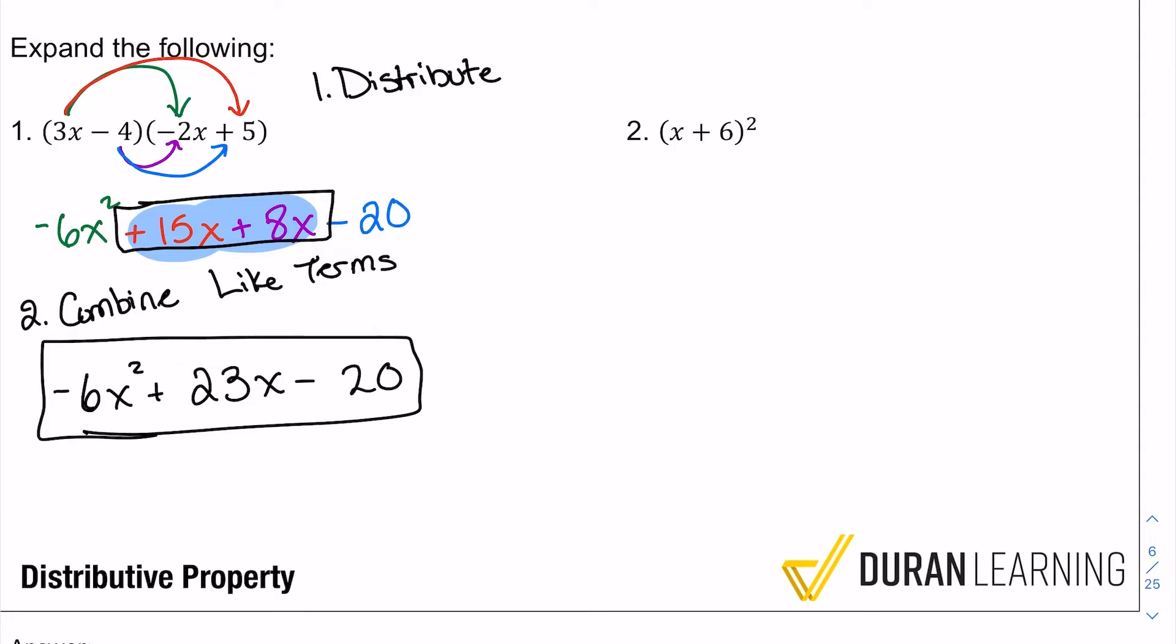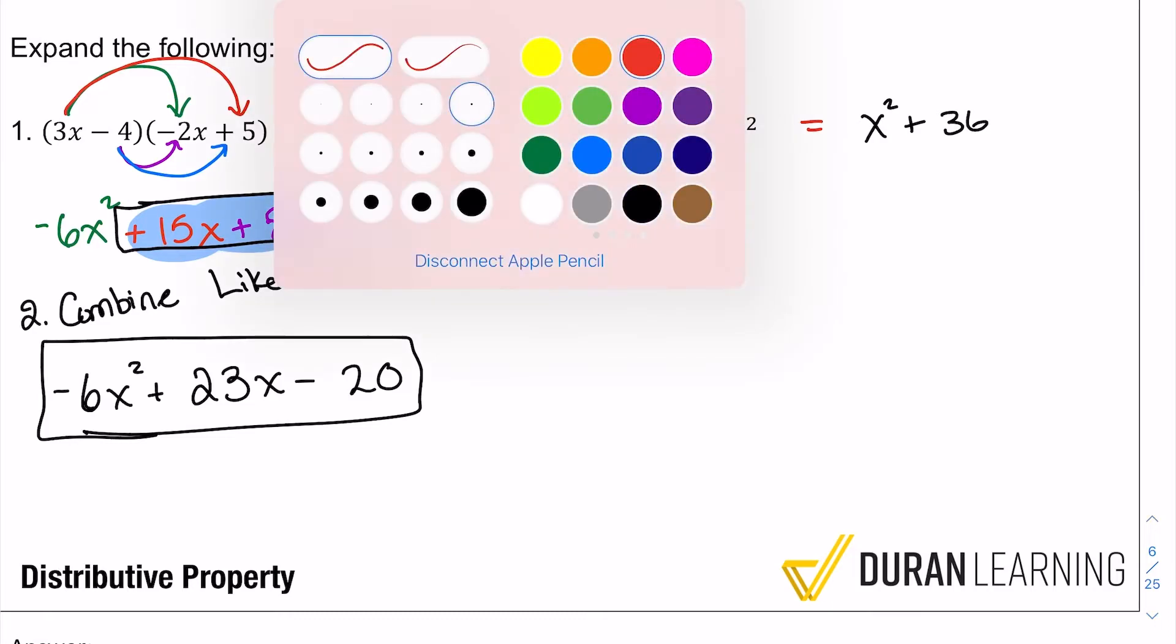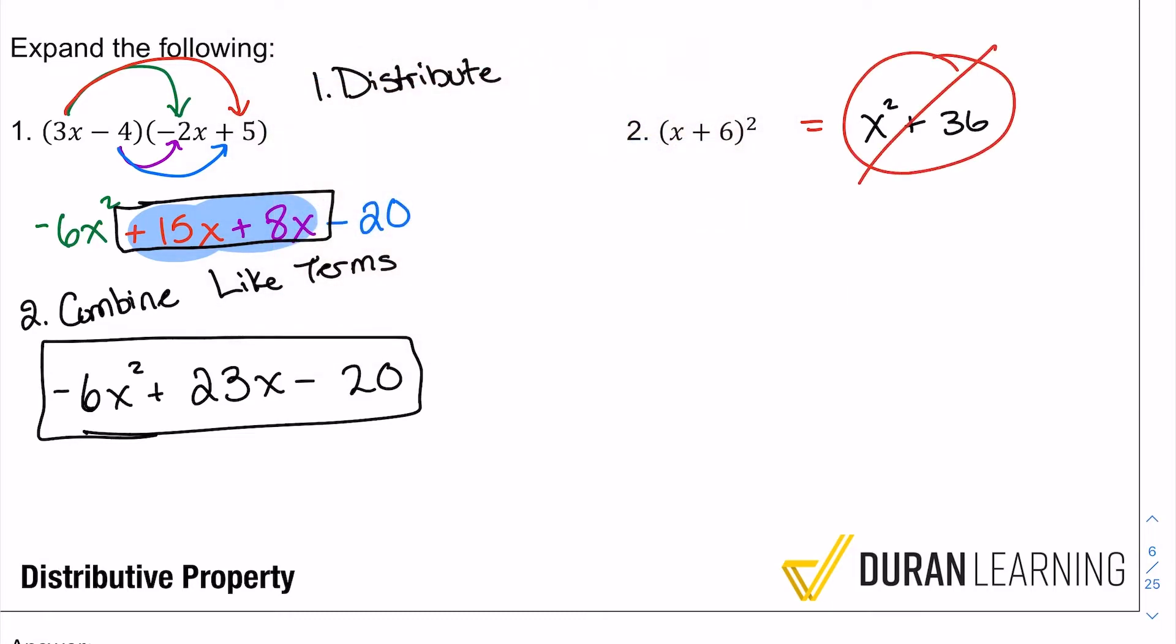But if you got it wrong or right, just make sure you understand why you're right. That's the most important thing here. So let's move on to number two. We have (x + 6)² . Now here's the thing: a lot of people think that this will result in x² + 36. That's supposed to be the answer. No, it's not. The reason is because anything squared is that number times itself. Remember that simple basic rule.